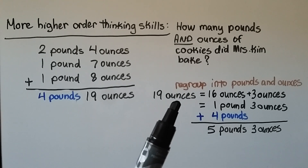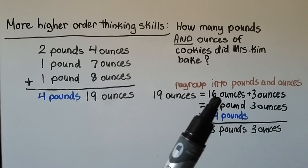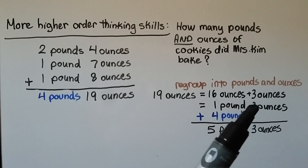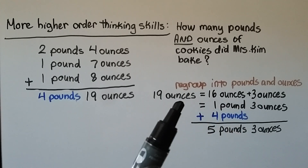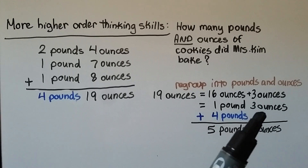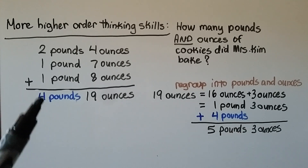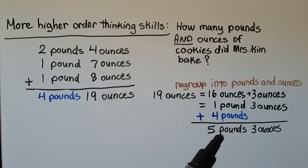We can regroup 19 ounces because 19 ounces equals 16 ounces plus 3 ounces, and 16 ounces is one pound. So the 19 ounces becomes one pound three ounces. Adding that to the four pounds gives us five pounds three ounces as the total.